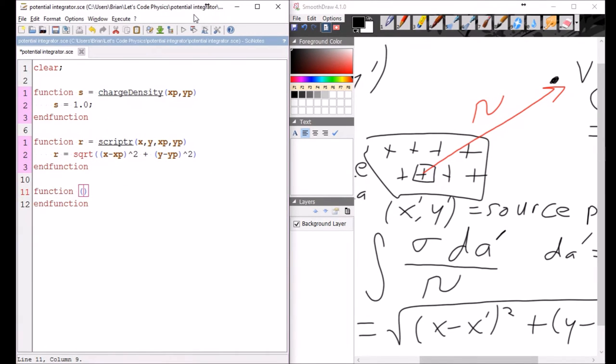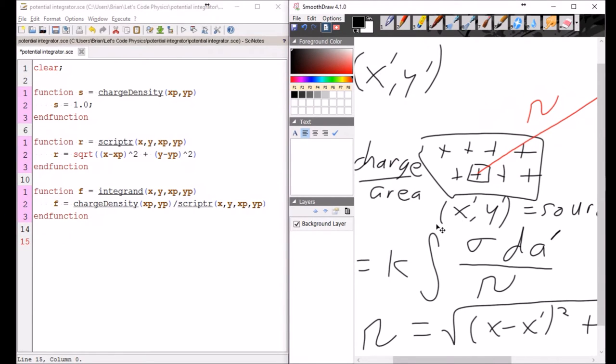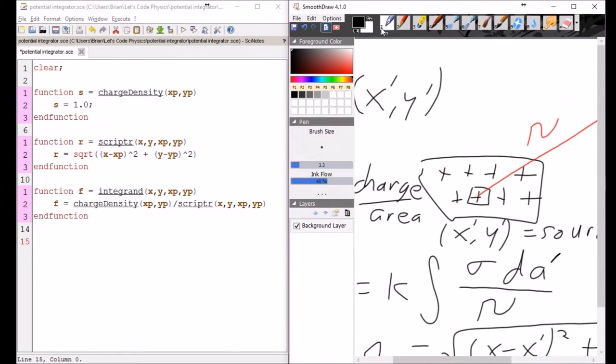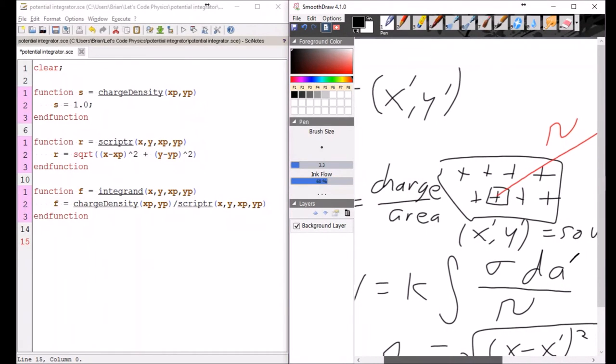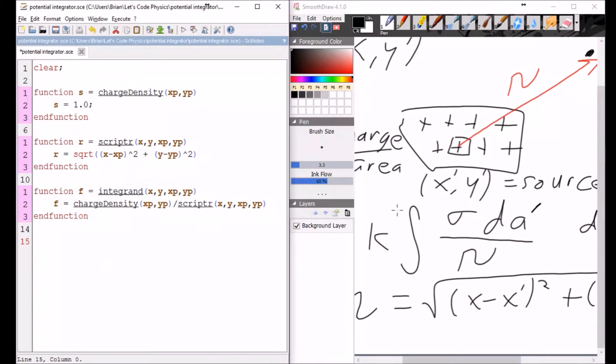So now I'm ready for the integrand. Let's call that f equals integrand of x, y, x prime, y prime. And so my integrand is going to be charge density of x prime and y prime divided by script r of x, y, x prime, y prime. I've already got the square rooting taken care of and everything else. I've got all my pieces taken care of.